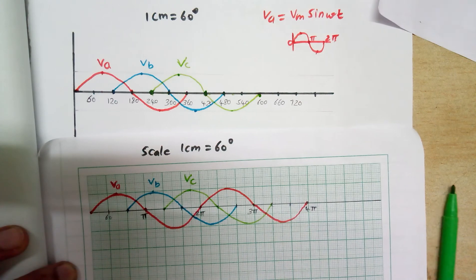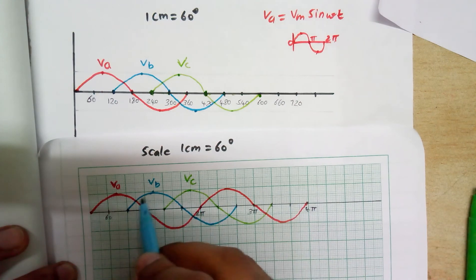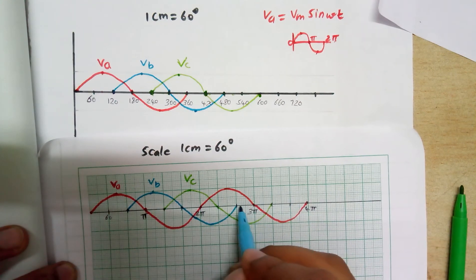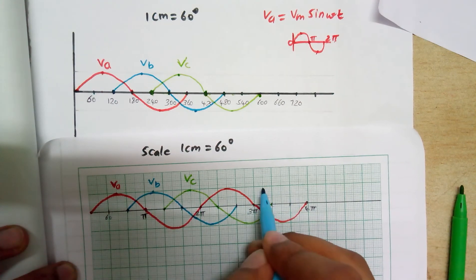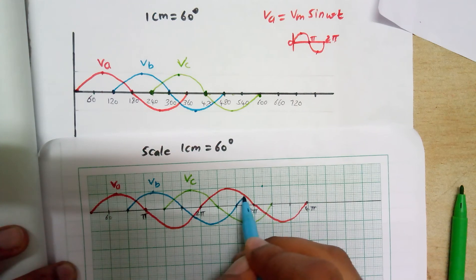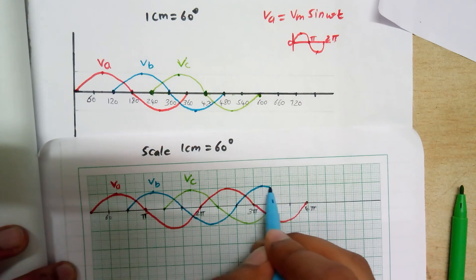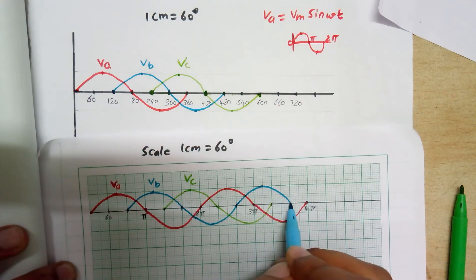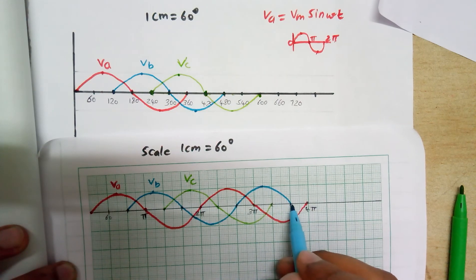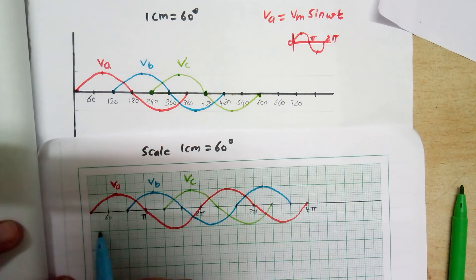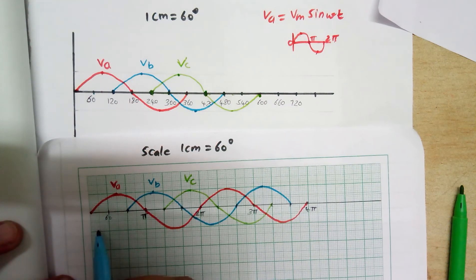Now for drawing Vb, we have already drawn Vb. The peak value is after 1.5 cm, then it conducts for 180 degrees to the ending point. Here also on the negative side, at 1.5 cm that will be the peak value.